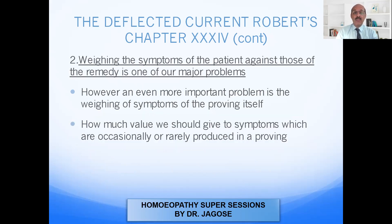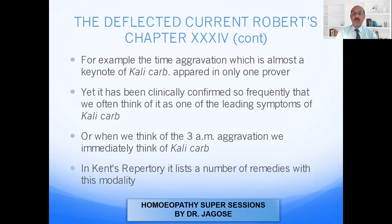Second, weighing the symptoms of the patient against those of the remedy is one of our major problems — that means identifying the correct symptoms of the patient and identifying their counterpart in our materia medica. An even more important problem is the weighing of symptoms of the proving itself. How much value should be given to symptoms which are only occasionally or rarely produced in a proving? For example, the time aggravation which is almost a keynote of Kali carb appeared only in one prover, yet it has been clinically confirmed so frequently that we often think it is one of the leading symptoms of Kali carb.